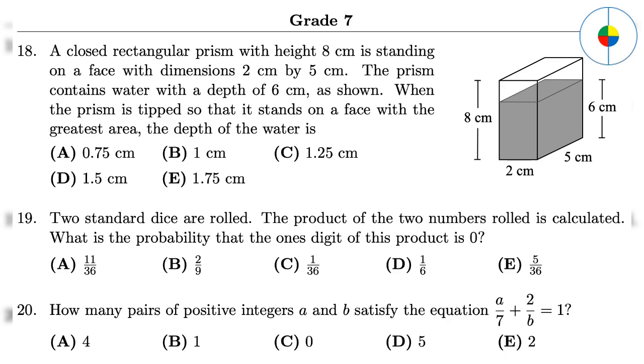Question 20: This is another guessing game. Given the question, a can only be 1, 2, 3, 4, 5, or 6. When a is 1, 2, 3, or 4, b is not an integer. When a equals 5, b equals 7. When a equals 6, b equals 14. So the answer is 2.